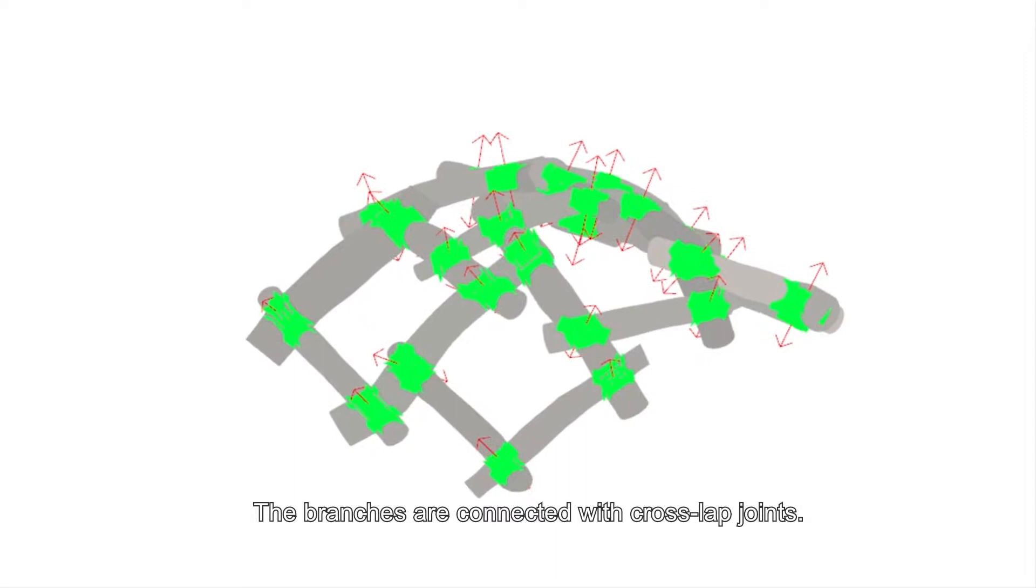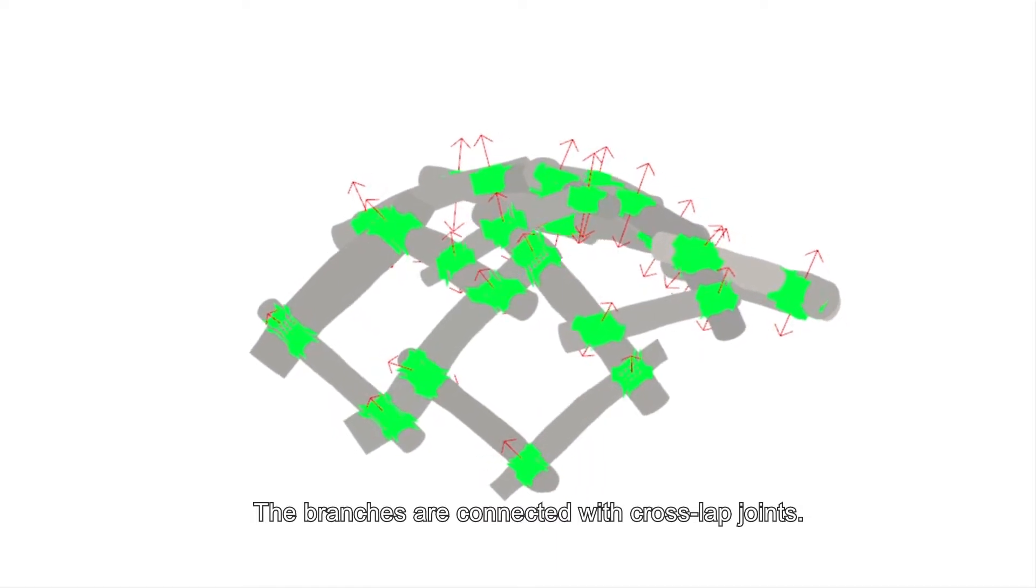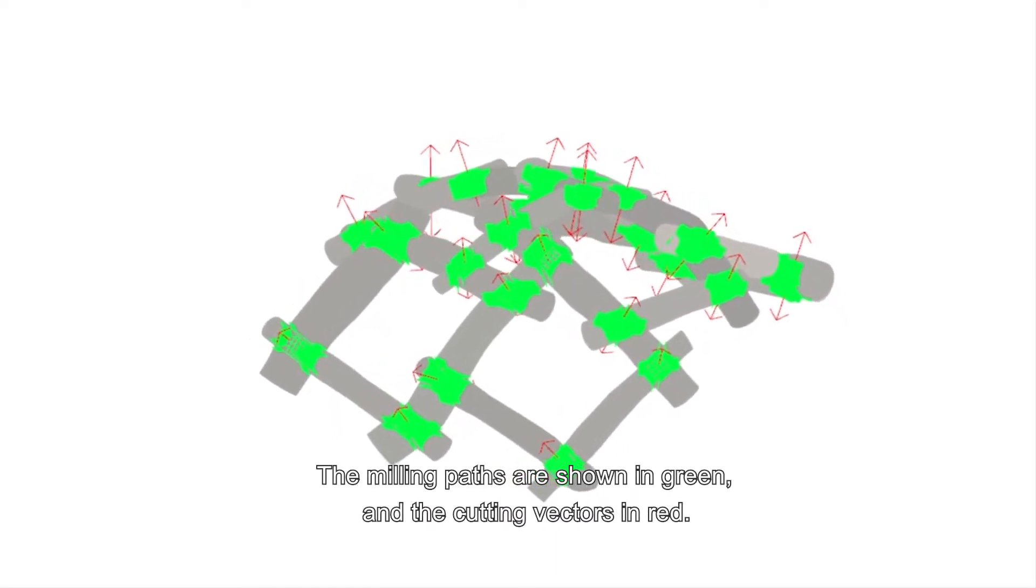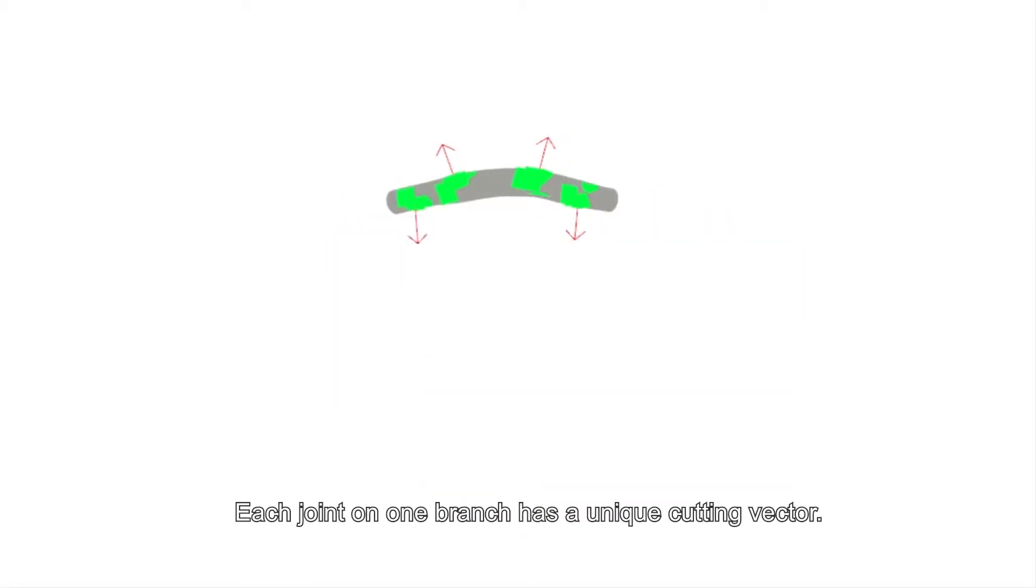The branches are connected with cross-lap joints. The milling paths are shown in green and the cutting vectors in red. Each joint on one branch has a unique cutting vector.